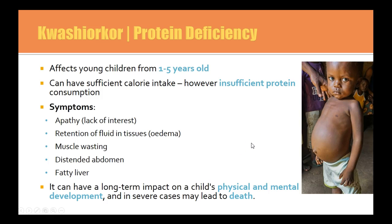Some macronutrient deficiency diseases include kwashiorkor, which is protein deficiency. You will need to remember how to pronounce and roughly spell that. It affects children one to five years old, and is usually a result of insufficient protein consumption, but can also involve insufficient calorie intake. It is primarily a protein deficiency.